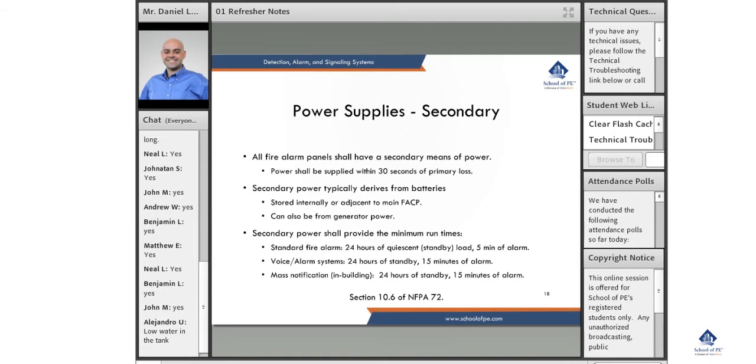All fire alarm panels must have a means for secondary power, and that power shall be supplied within 30 seconds of primary loss. It's not necessarily emergency power, which must be supplied in 10 seconds, but it is quicker than legally required power, which I believe is in 50 or 60 seconds.